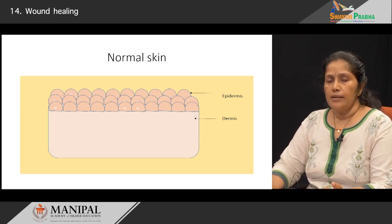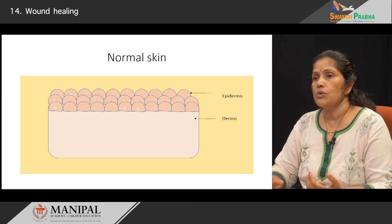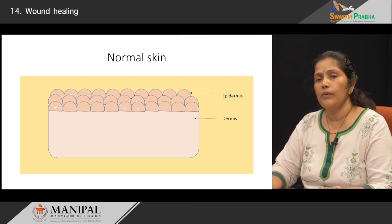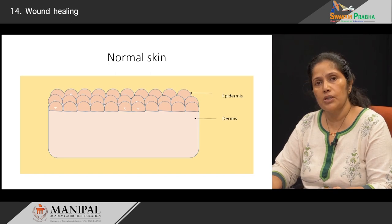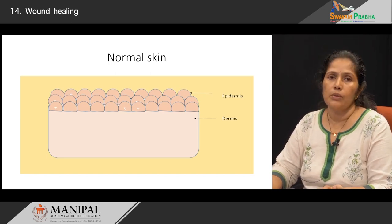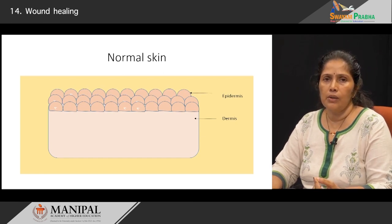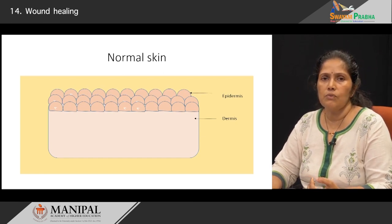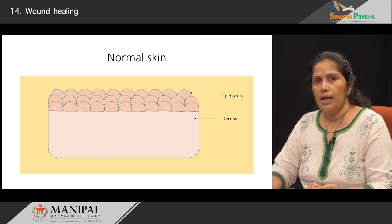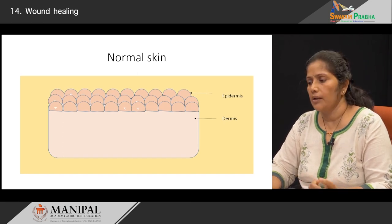If we look at the normal skin, we will examine what happens whenever there is injury to the skin. The skin has two layers: an upper superficial layer known as the epidermis, and below that what is known as the dermis. Most injuries cause damage to both the epidermis and the dermis, and we are looking at this kind of tissue repair process.